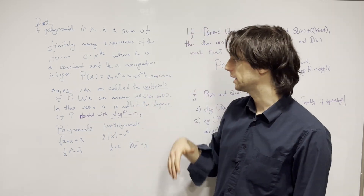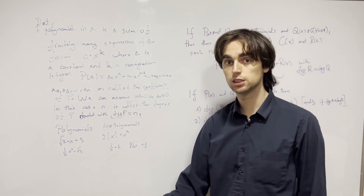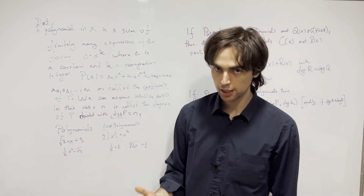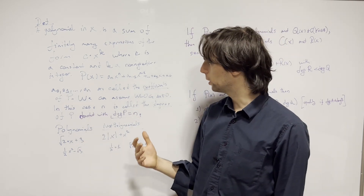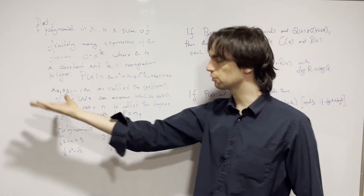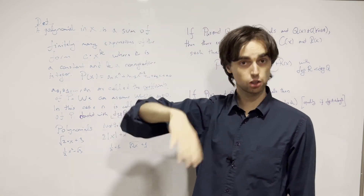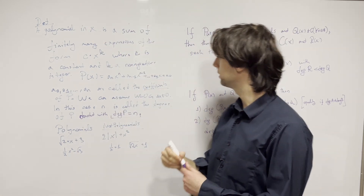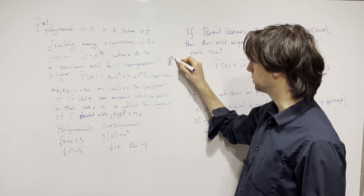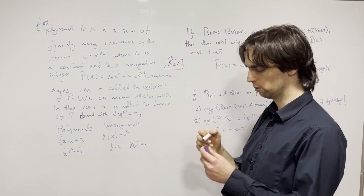All of these — a_0, a_1, a_2, a_3, all the way to a_n — are called the coefficients of the polynomial p. We can have a polynomial with real coefficients, integer coefficients, or coefficients in the complex numbers. There's even a way to denote the sets of all polynomials with coefficients in the natural numbers, real numbers, integers, or complex numbers.